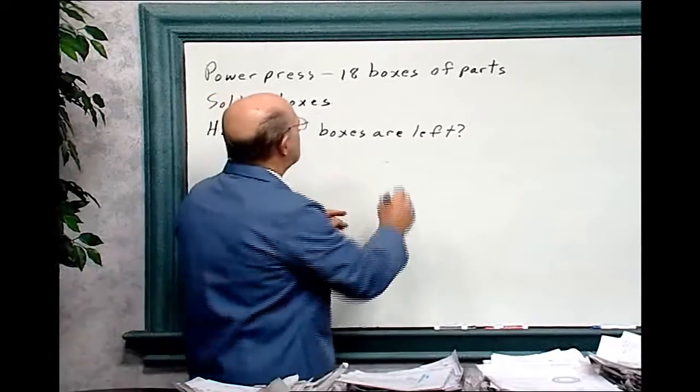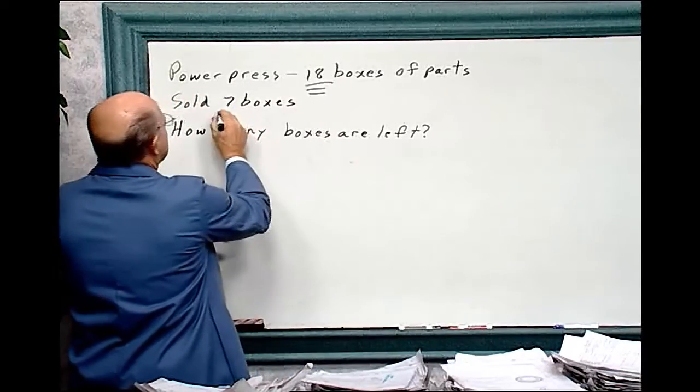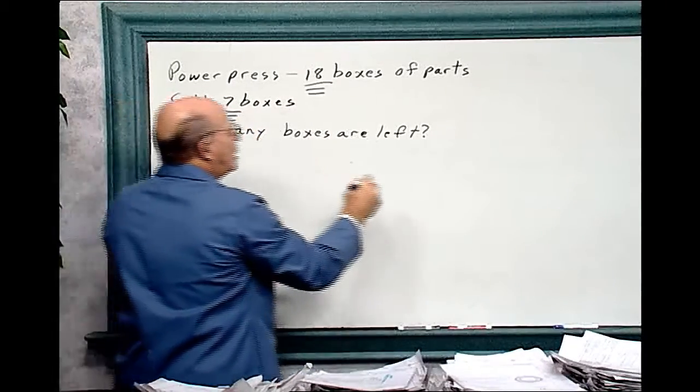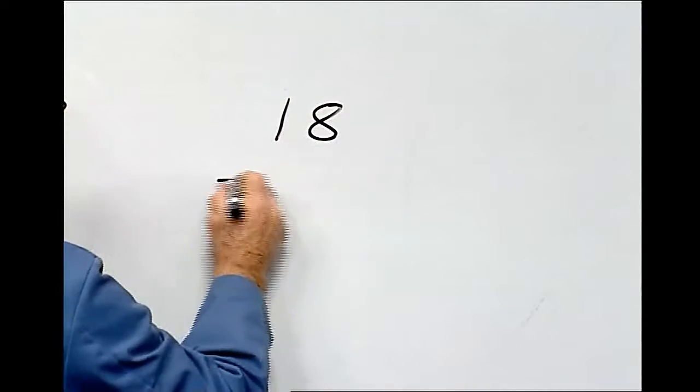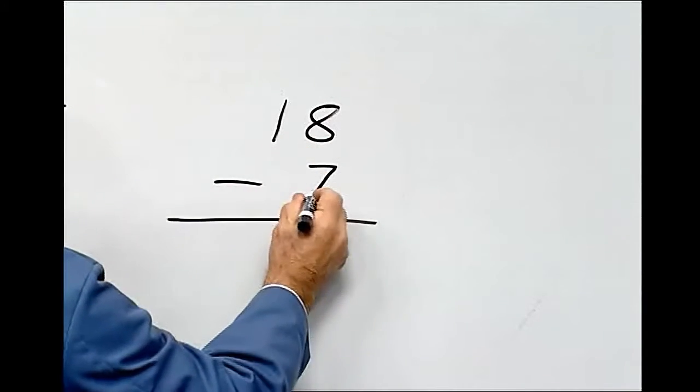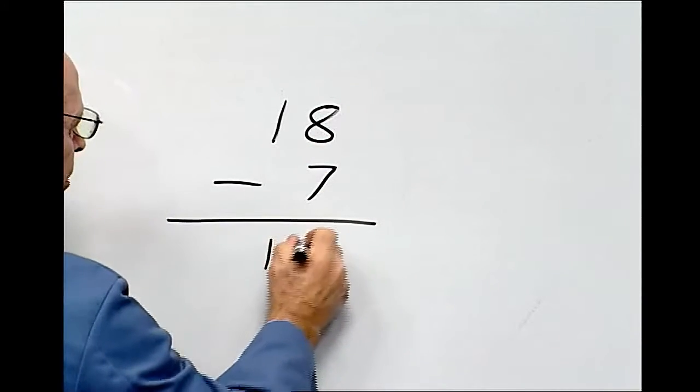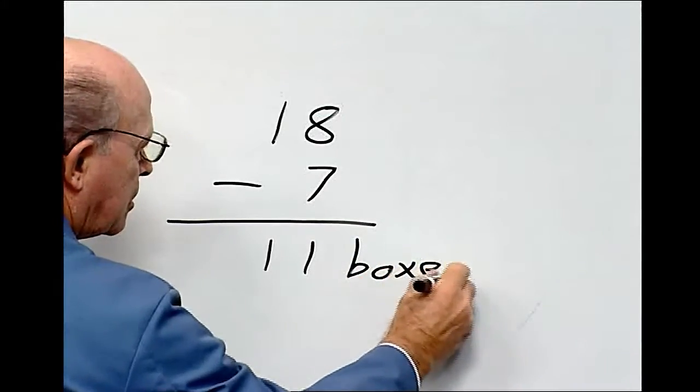So it's 18 boxes. This is 18, we've got 18 here. And they sold seven boxes, so they made 18 boxes and they sold seven. So it's 18 minus seven, and 18 minus seven equals 11. So they have 11 boxes left.